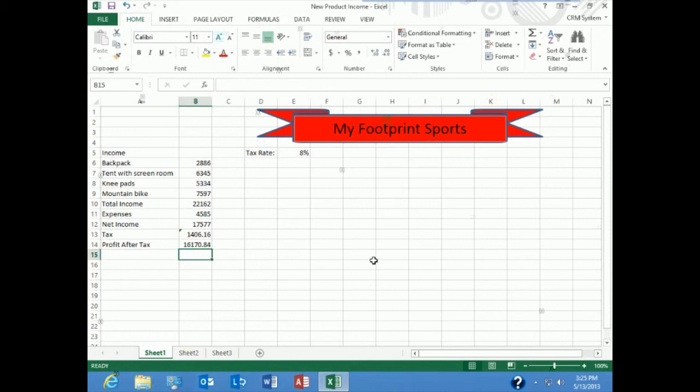Again, if you make any change in this scenario, all of your formulas are going to update. So let's go back up to backpack and change it to $30,000, and you'll notice everything updates immediately. And we have a much larger profit, of course, at that point. Okay, I'm going to hit undo again.